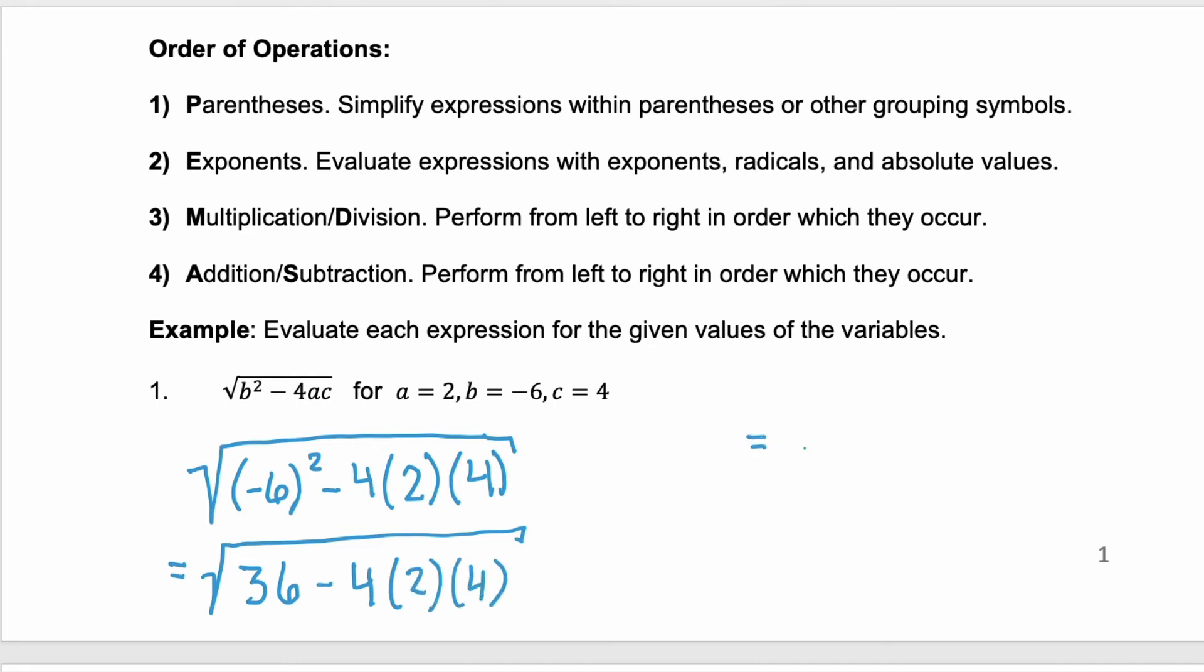Our next step is going to be multiplying. So we're going to multiply four times two times four. Four times four is 16 times the two is 32. And then our last step is going to be subtraction, 36 minus 32, which is four.